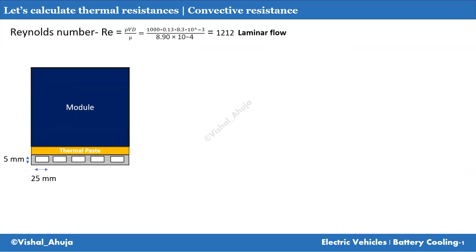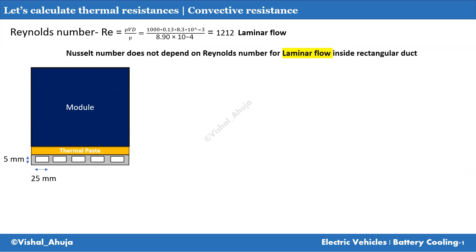When the Reynolds number is less than 2000, we have laminar flow. For laminar flow in rectangular ducts, the Nusselt number does not depend on the Reynolds number.